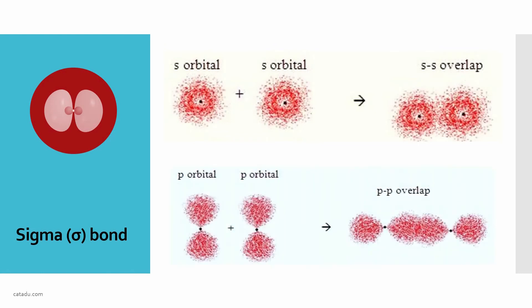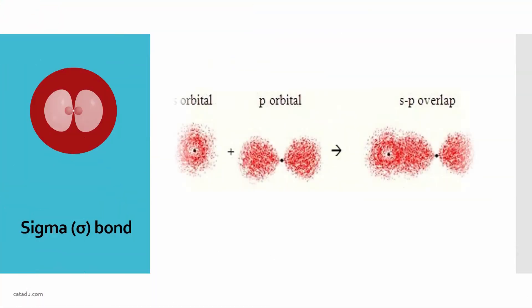This can be p-p overlap: chlorine-chlorine bond. Chlorine-chlorine sigma bond is p-p overlap. s-p overlap: this is hydrogen-chlorine. Hydrogen has s orbital in the last shell and chlorine has p orbitals, so s-p overlap.